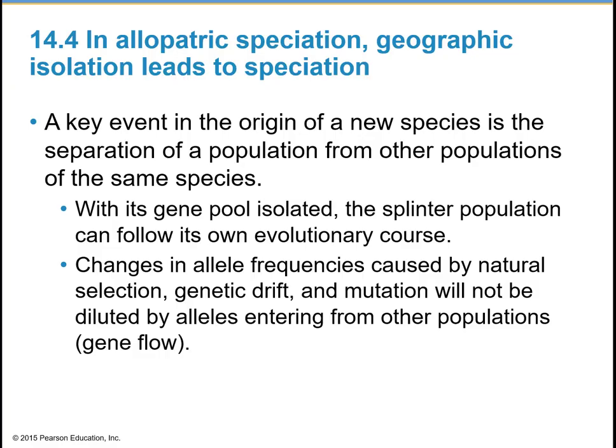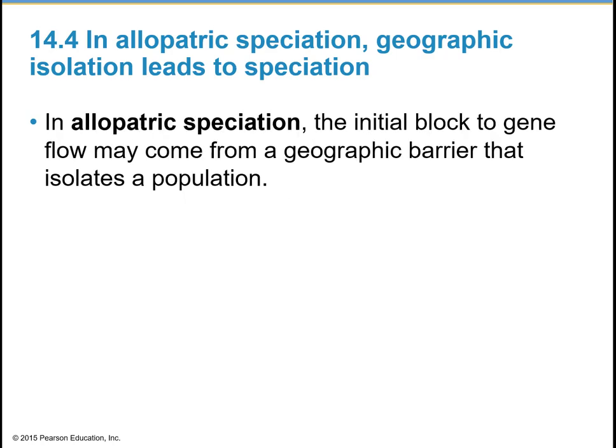Mechanisms of speciation: a key event in the origin of a new species is the separation of a population from other populations in the same group or species. When the gene pool is isolated, the splinter population can follow its own evolutionary course. The changes in allele frequencies caused by natural selection, genetic drift, and mutation will not be diluted by alleles entering from other populations — also known as gene flow. In allopatric speciation, the initial block to gene flow can come from a geographic barrier that isolates a population.